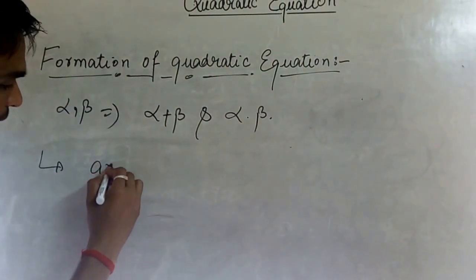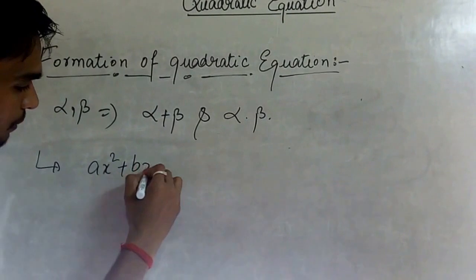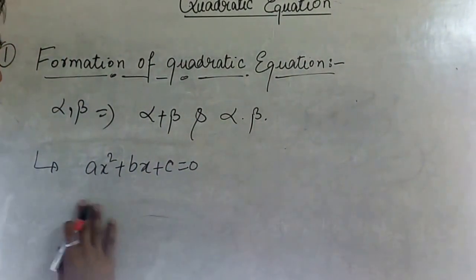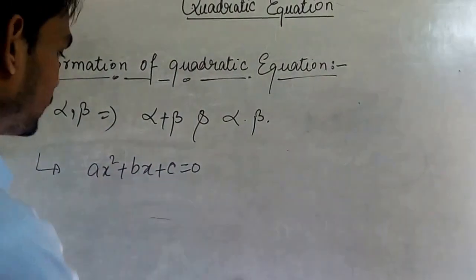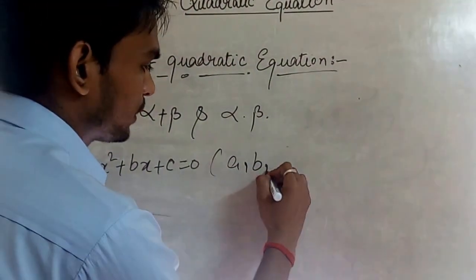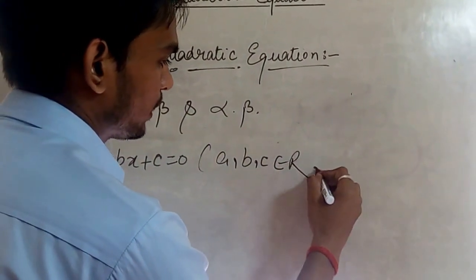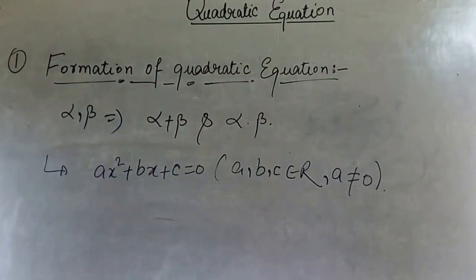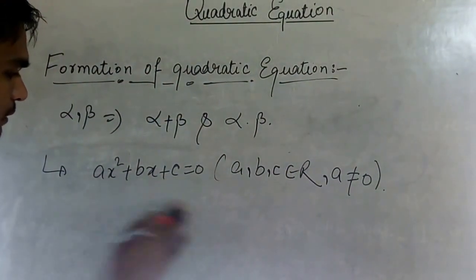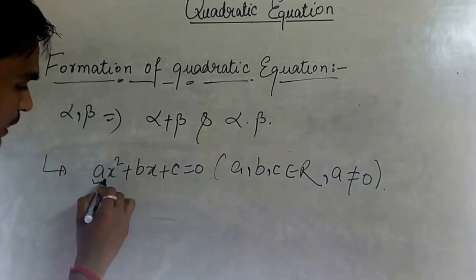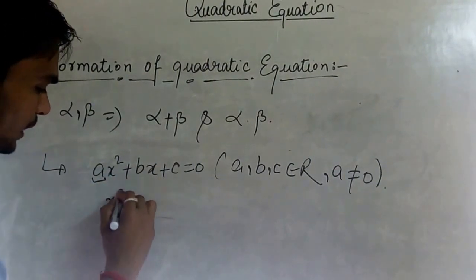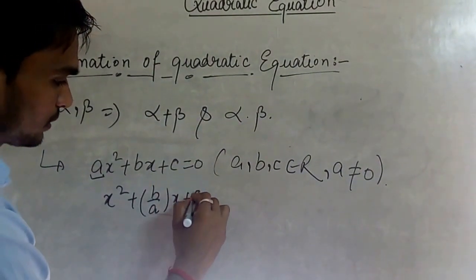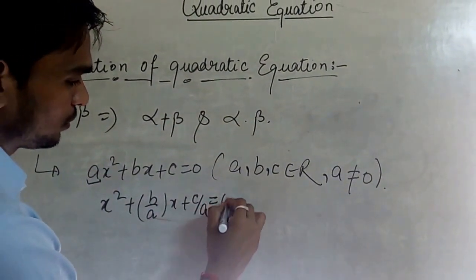We know that ax² + bx + c = 0 is the quadratic equation — it is the general form of the quadratic equation — where a, b, c belong to the real numbers and a ≠ 0. If we divide the entire equation by a, we get x² + (b/a)x + (c/a) = 0.